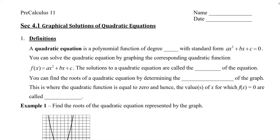In this video, we're going to take a look at solving quadratic equations by graphing. So if you recall, a quadratic equation is a polynomial function of degree 2 with standard form ax squared plus bx plus c equal to 0. It's equal to 0 because it is an equation. You can solve the quadratic equation by graphing the corresponding quadratic function. Function because now instead of 0, we have f of x here.